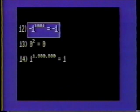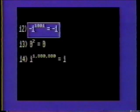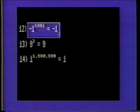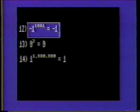Number twelve: negative one raised to the one-thousand-one power. Remember that an even number of negative signs results in a positive number, while an odd number of negative signs results in a negative number. In this problem, one-thousand-one is an odd number. Therefore, the final solution will be negative. Since one times one is always one, and we know the sign will be negative, the solution is negative one.